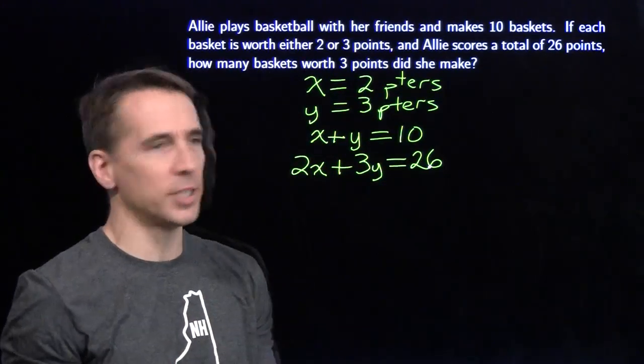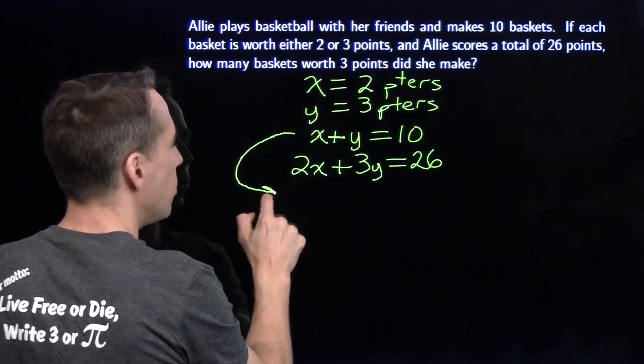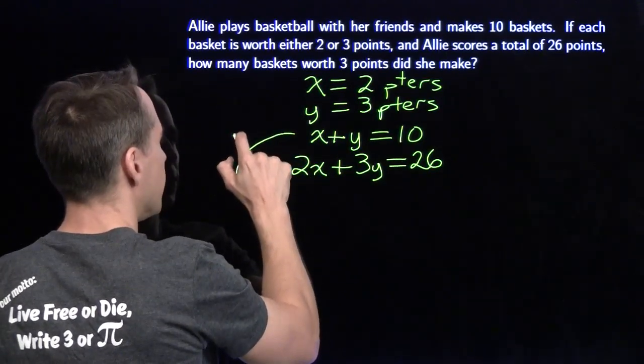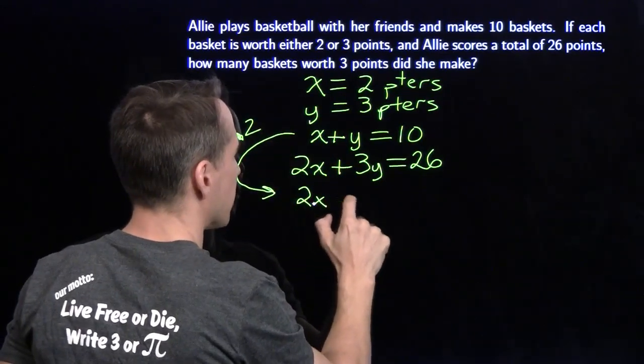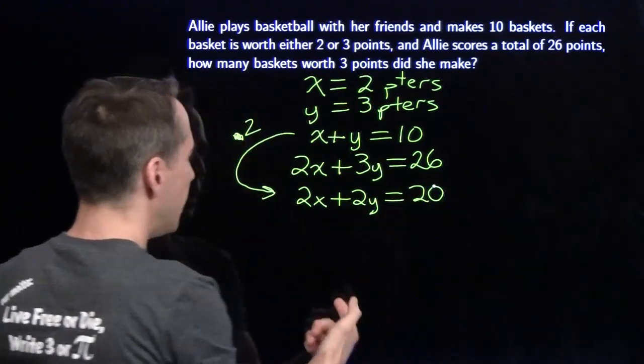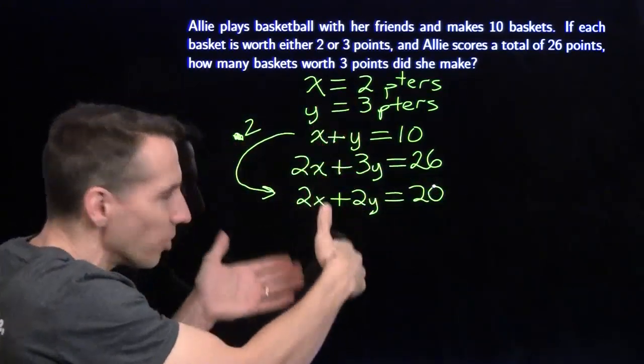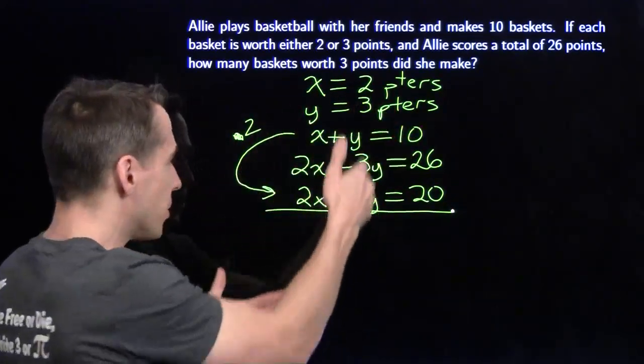We have a nice little system of equations here, and we know how to handle that. I'm going to multiply this equation by 2, and that's going to give me 2x plus 2y is 20. Now I can subtract this equation from the first equation.